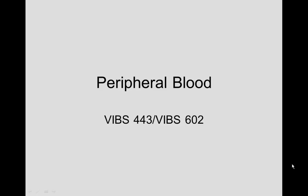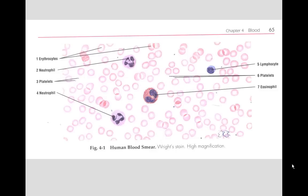In peripheral blood, we can see a smear of human blood as depicted in the atlas. A common cell you see is a neutrophil — there's another one there — with a gray cytoplasm and a lobulated nucleus. The nucleus is in lobes with very dark-staining heterochromatin.